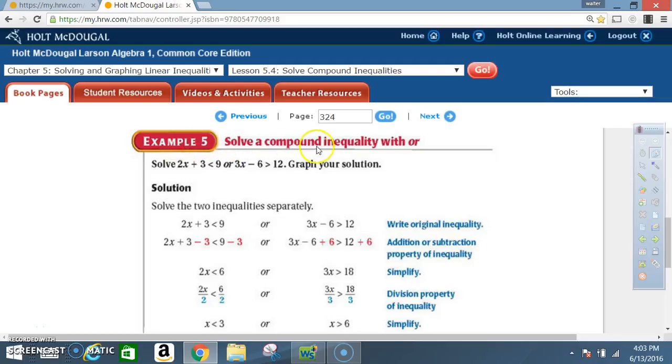Example 5. Solve a compound inequality with OR. Solve 2x plus 3 is less than 9, or 3x minus 6 is greater than 12. Graph your solution.